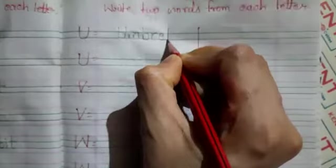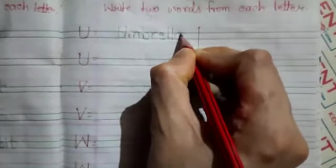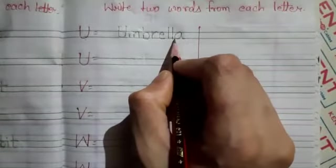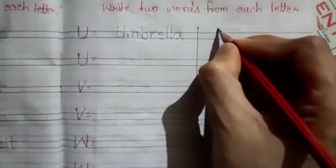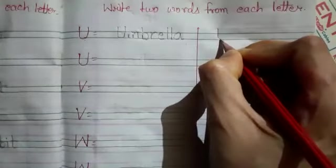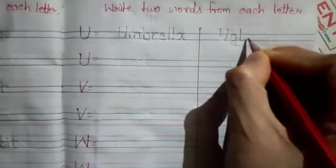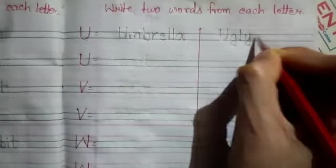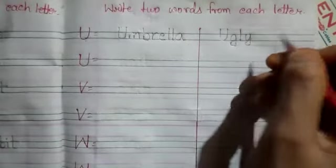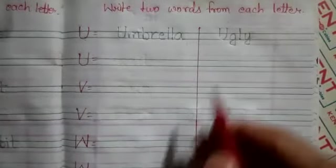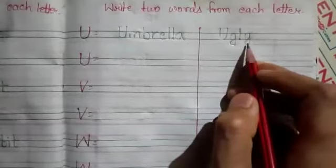Next word is U G L Y, ugly. Ugly means ganda. Next letter is V.